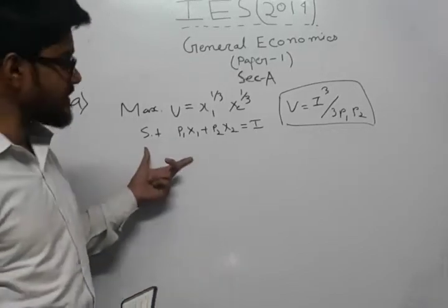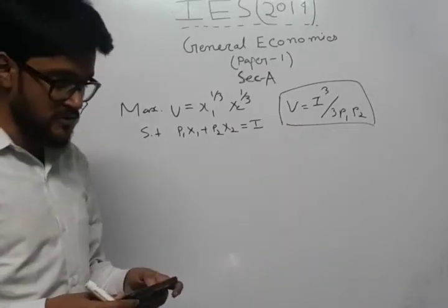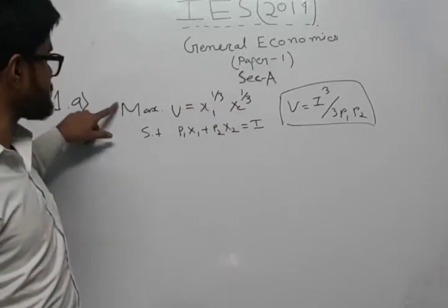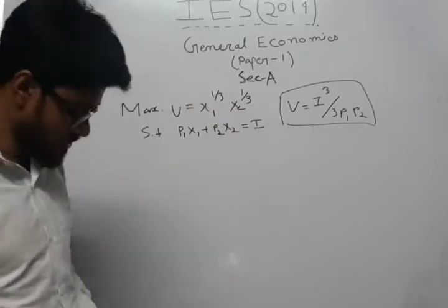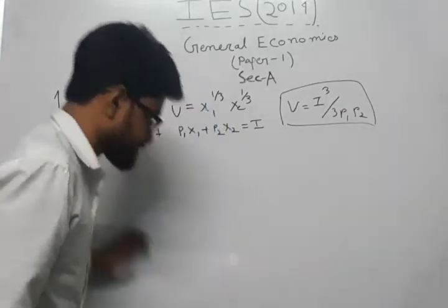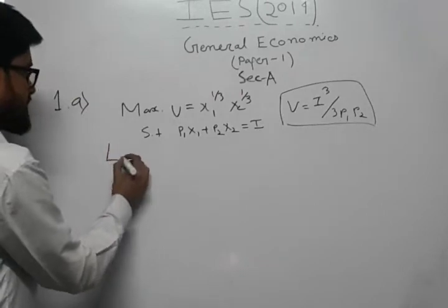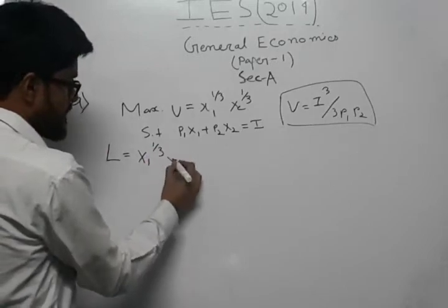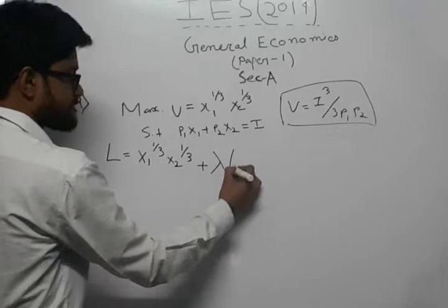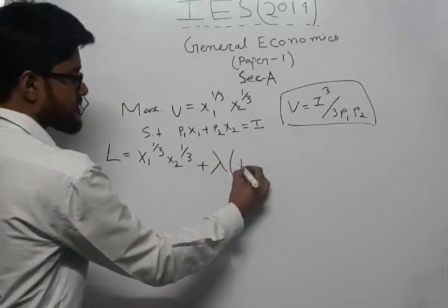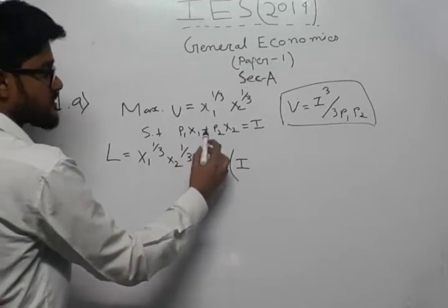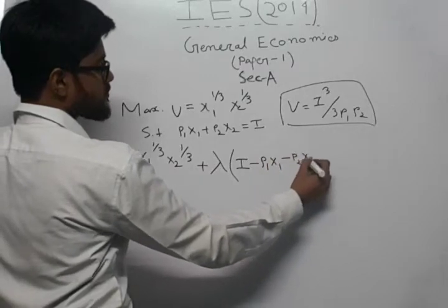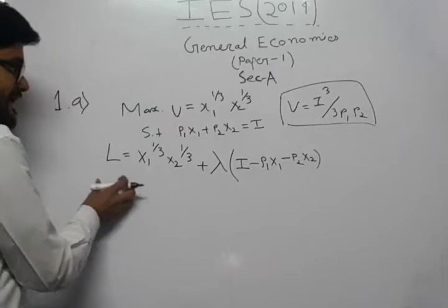We need to find whether this is a true statement or not. First, we will find the values of x1 and x2 by incorporating the concept of Lagrange. We write down the Lagrange function: L equals x1 to the power 1 by 3 times x2 to the power 1 by 3, plus lambda times (i minus p1·x1 minus p2·x2).